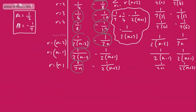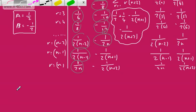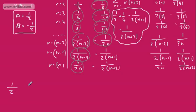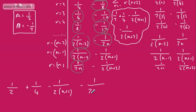All that's left is to express this in its simplest form by adding these fractions. If you want to skip to the end you can, as this is just adding fractions. You can use whichever method you prefer — I'm going to find a common denominator.